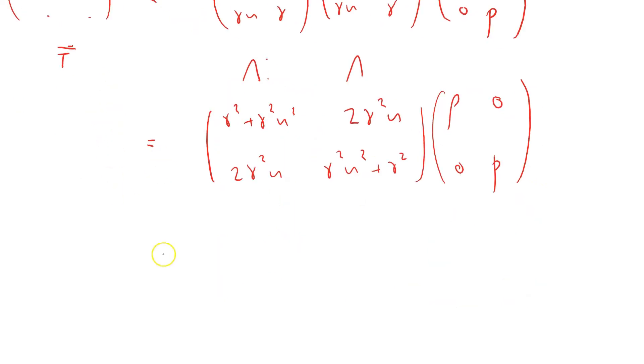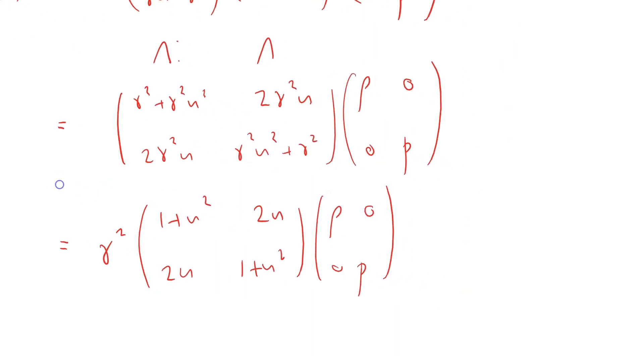I can factorize that quite nicely because I can take out a scalar factor of gamma squared, 1 plus u squared, 2u, 2u, 1 plus u squared times rho 0, 0p. Remember, red equals flawed. Flawed thinking.